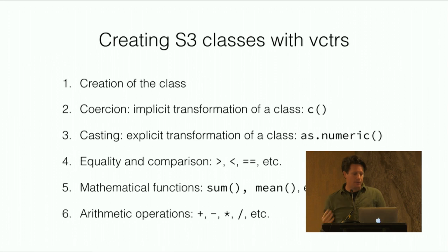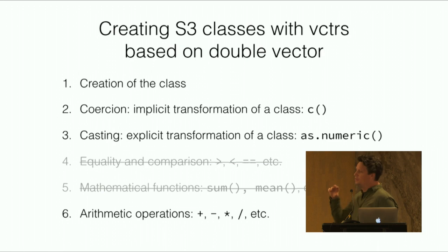There's basically six different steps to creating an S3 class with vectors. I'm not going to go through all these, I'm going to concentrate on the first half, the first three. I won't go into the last three but I will talk about them - you'll see how they are when they're implemented. If you're creating a class that's based on double vectors, you only have to do four of these - two of these steps you get for free.